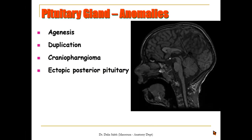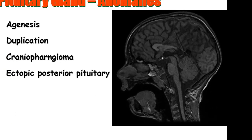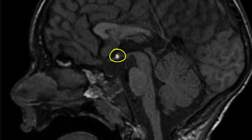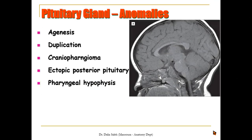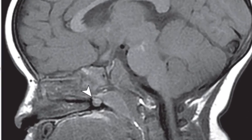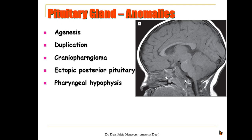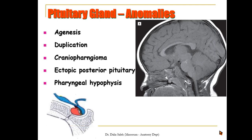Or we have ectopic posterior pituitary gland. In this sagittal MRI section you can see a bright spot at the base of the brain and another one at the sella turcica, and it is associated with pituitary dwarfism. Or we can have what is called pharyngeal hypophysis, where a cyst is seen hanging at the roof of the pharynx — not related to the adenoids or pharyngeal tonsil. The craniopharyngeal canal is still open, leading upward to the sella turcica. This anomaly occurs if the pouch's stalk did not obliterate completely, leaving a remnant of the craniopharyngeal canal where accessory or ectopic pituitary tissue can be found.